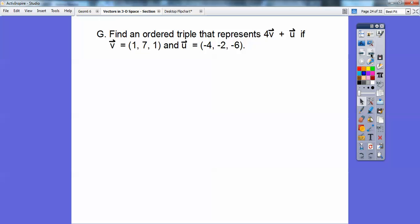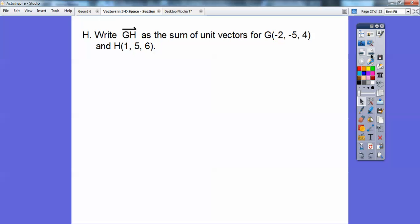So find an ordered triple that represents four times the vector v plus the vector u. If the vector v is this ordered triple and the vector u is this ordered triple. It's just like an ordered pair. I'm going to multiply this one times four, and then whatever that result is, I'm going to add that one right there. So there we go. I'm going to multiply those together, and I get that ordered triple. I told you this is easy. It's so easy, it's kind of embarrassing, right? You're thinking, yes, nice, easy homework assignment.